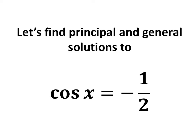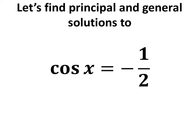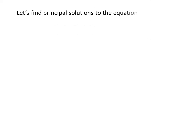In this video, we will learn to find the principal and general solutions to the equation cosine of x is equal to minus half. Let us first find the principal solutions. We know the solutions to the trigonometric equation for which x is greater than or equal to zero and less than two times pi are the principal solutions.